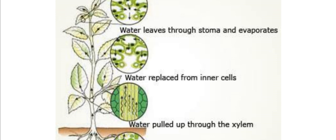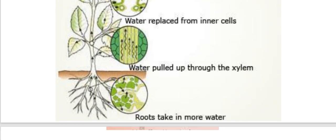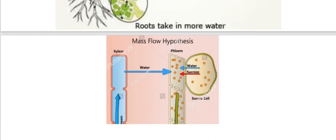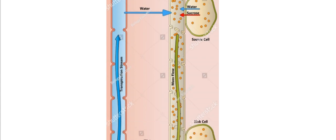Here you can see the transportation of water and minerals from soil to the leaves through root hairs. You can also see the transportation of food produced by photosynthesis from the leaves to other parts of the plant.